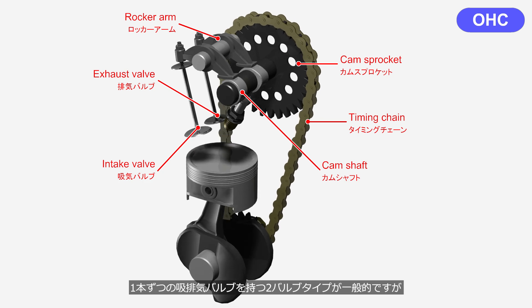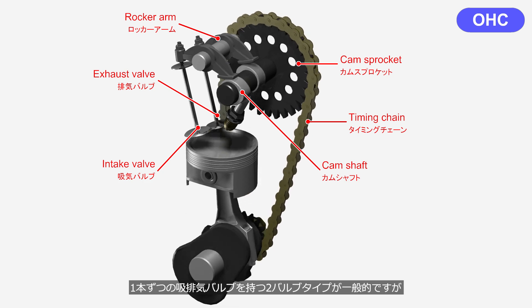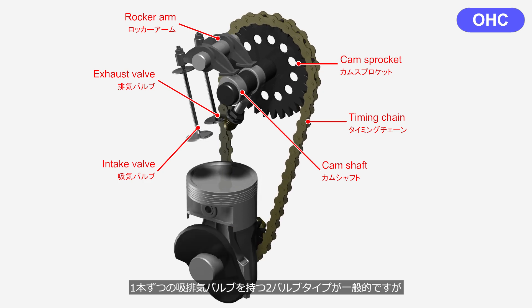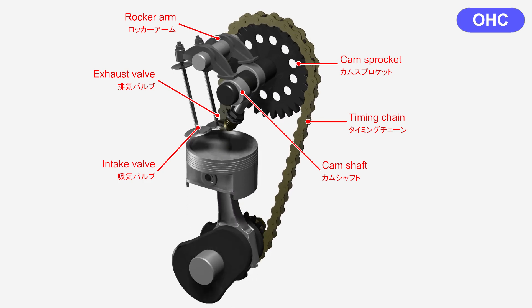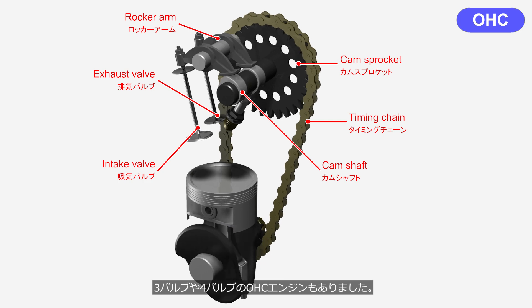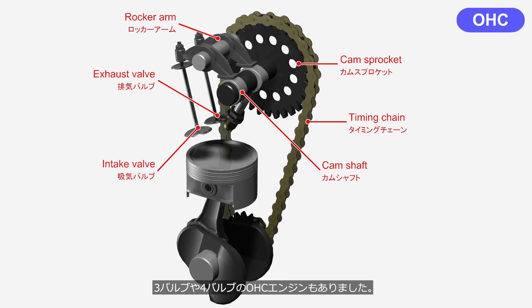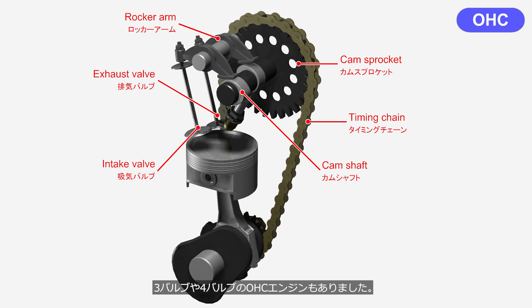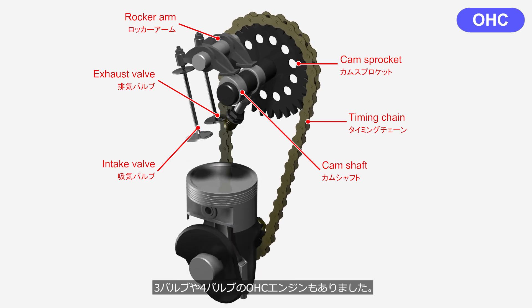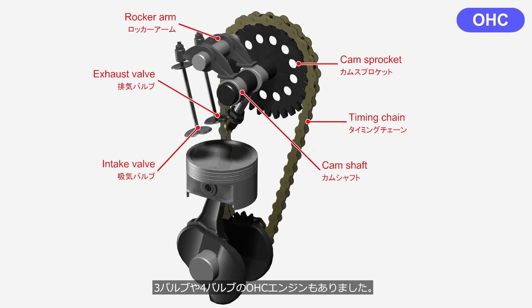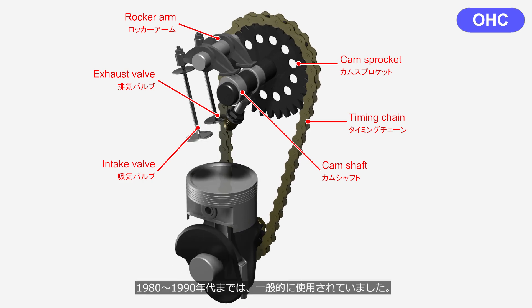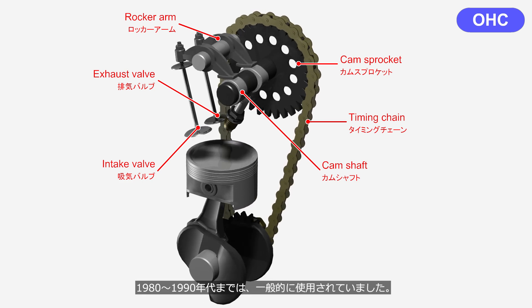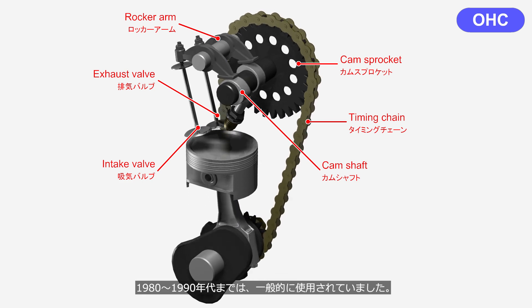The two-valve type, with one intake and one exhaust valve per cylinder, is common. But there have also been OHC engines with three valves or four valves per cylinder. They were commonly used until the 1980s to 1990s.